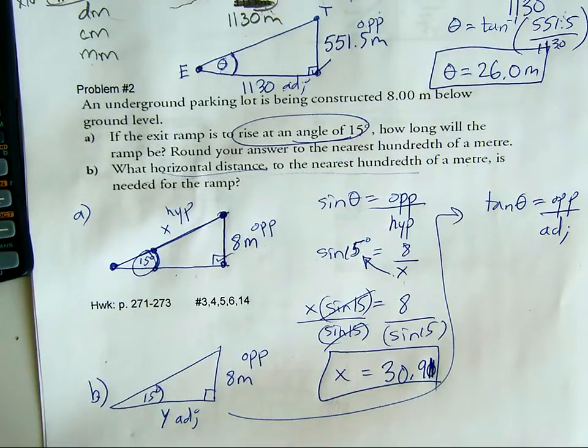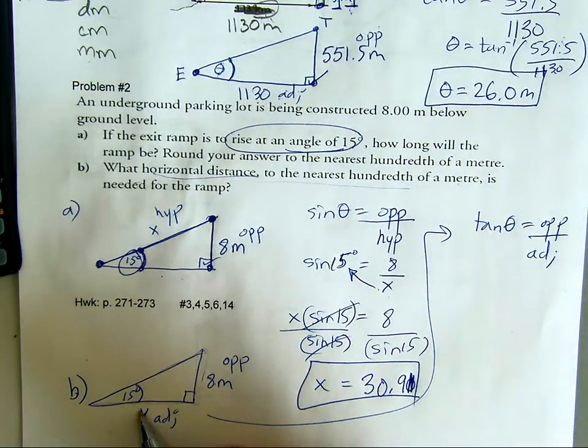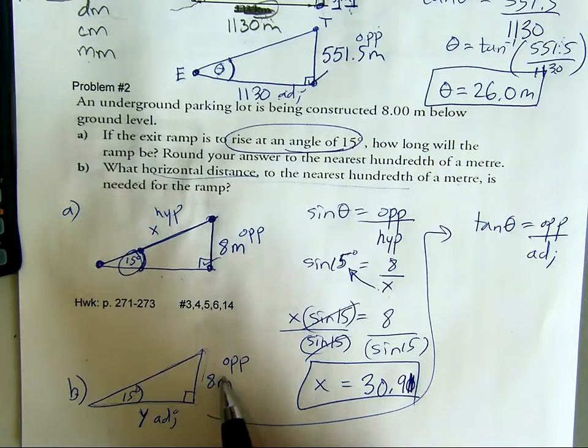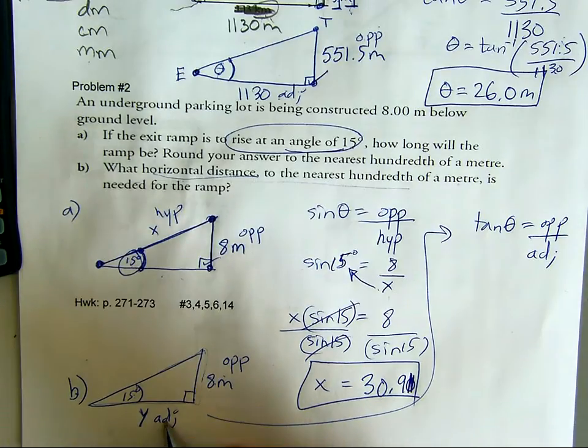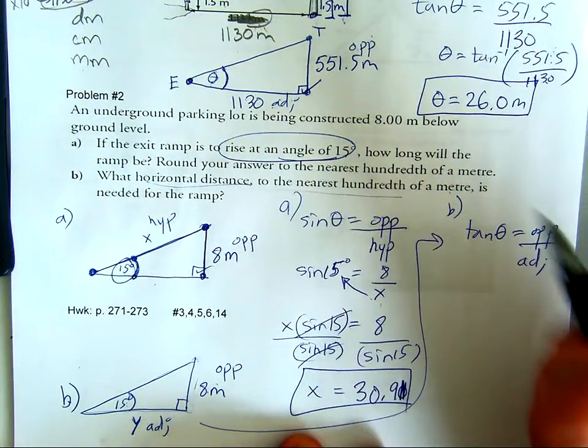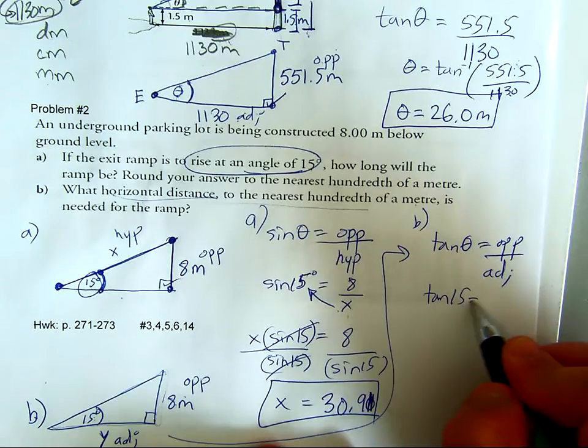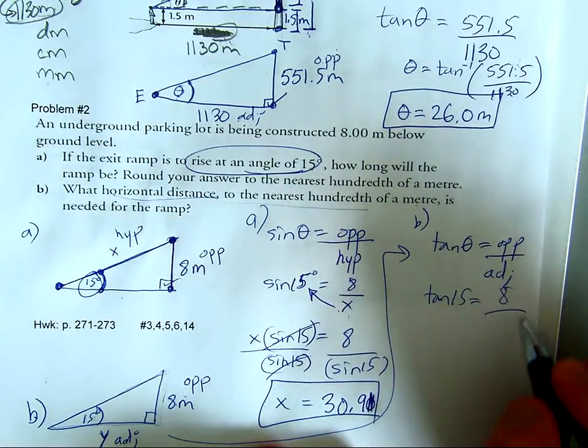Using the construction of this triangle, this is 15, this is 8, and we're trying to find y. According to this, 15 is opposite, this is adjacent. What relates opposite and adjacent? Tangent relates opposite and adjacent. So tangent of the theta that I'm looking for is opposite (8) over adjacent (y).